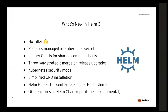Helm 3 also introduces library charts as a first-class citizen. A library chart is a type of chart that does not deploy anything — its only purpose is to be included by other charts as a dependency, sharing common functionality between multiple related child charts. This concept existed in Helm 2 but is now formally recognized in Helm 3.